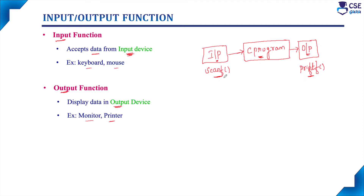The programmer needs to interact with the computer in order to execute the C code. This interaction will happen only with the help of inputs and outputs. Input can be provided with the help of the input function, and outputs can be displayed on the output screen with the help of the output function.